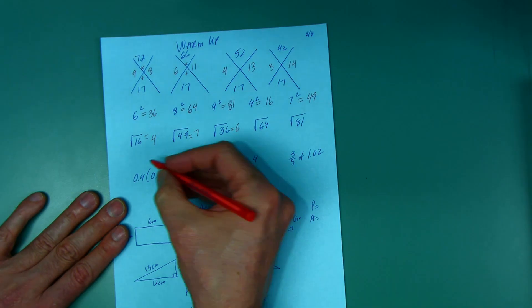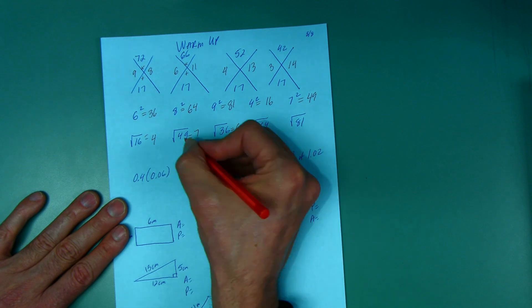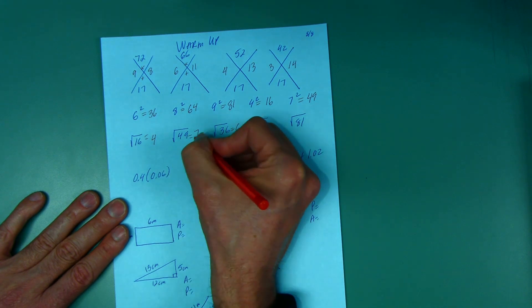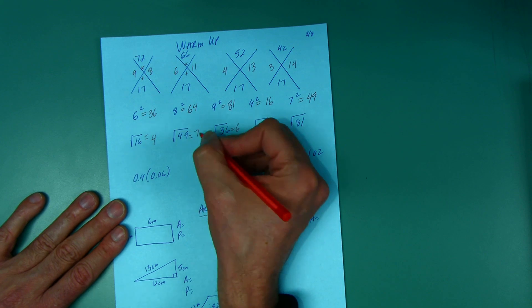So when people first start doing this, they either want to take half or they want to say the answer to this is 7 times 7. No, it's just 7. The square root of 49 is 7.